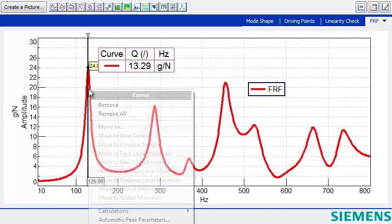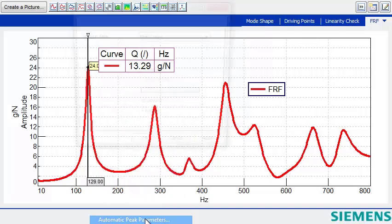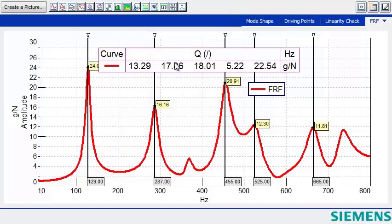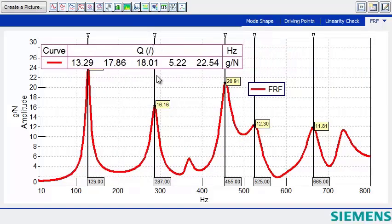of the peaks in the FRF, we can right-click, pick Automatic Peak Parameters, and we can select the number of peaks we would like to get damping values for. I hit 5 here, and now we have the Q factor for the 5 highest peaks in the FRF.